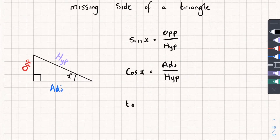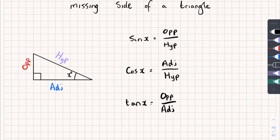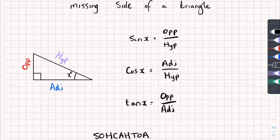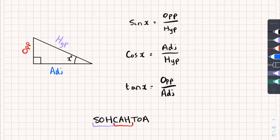And finally, tan of the given angle gives us the opposite side divided by the adjacent side. These are three things you do have to remember, but you'll probably have been told about SOH-CAH-TOA, which is an easy way to remember it: sine is opposite over hypotenuse, cos is adjacent divided by hypotenuse, and tan is the opposite divided by the adjacent.